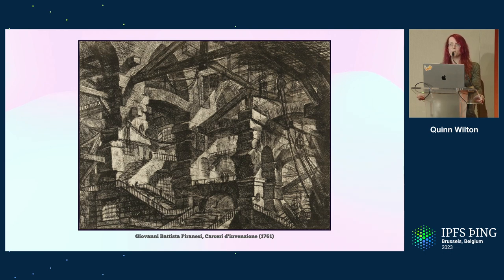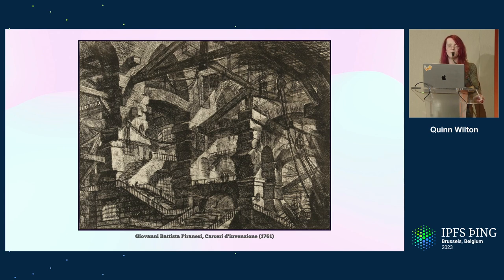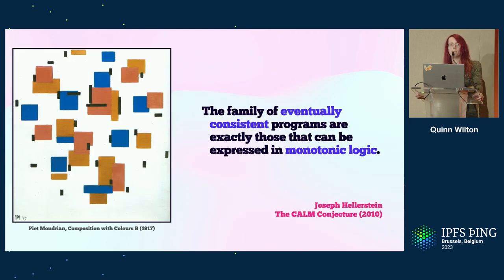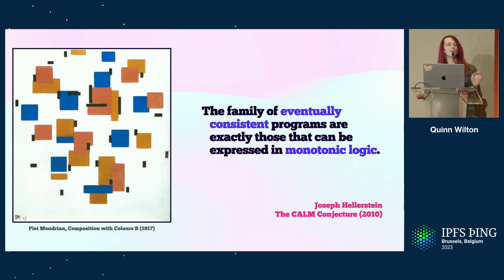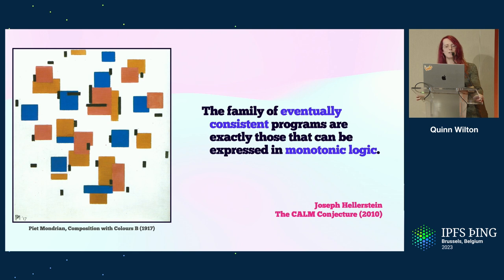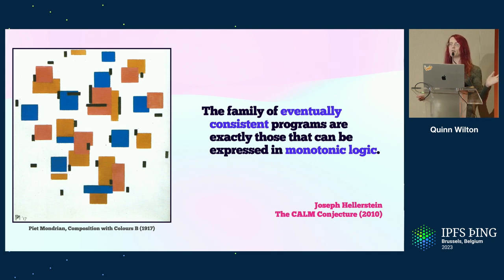In a distributed system, though, there is no privileged position. The maze is always dynamic, always changing, and every node's perspective is formed out of incomplete and local information. But it's this indeterminacy that Datalog can cut right through. The big insight that makes this possible is the CALM principle — consistency as logical monotonicity. The CALM principle gives a correspondence between the family of eventually consistent programs with coordination-free execution strategies and monotonic logic, i.e. Datalog. Not only is any program expressible using a monotonic subset of Datalog guaranteed to be eventually consistent in a distributed setting, but there also exists an embedding of every eventually consistent program in monotonic Datalog. One simple correspondence captures the precise power and semantics of a distributed programming paradigm that entirely avoids the use of distributed locks, consensus, and all of the other coordination protocols we rely on.